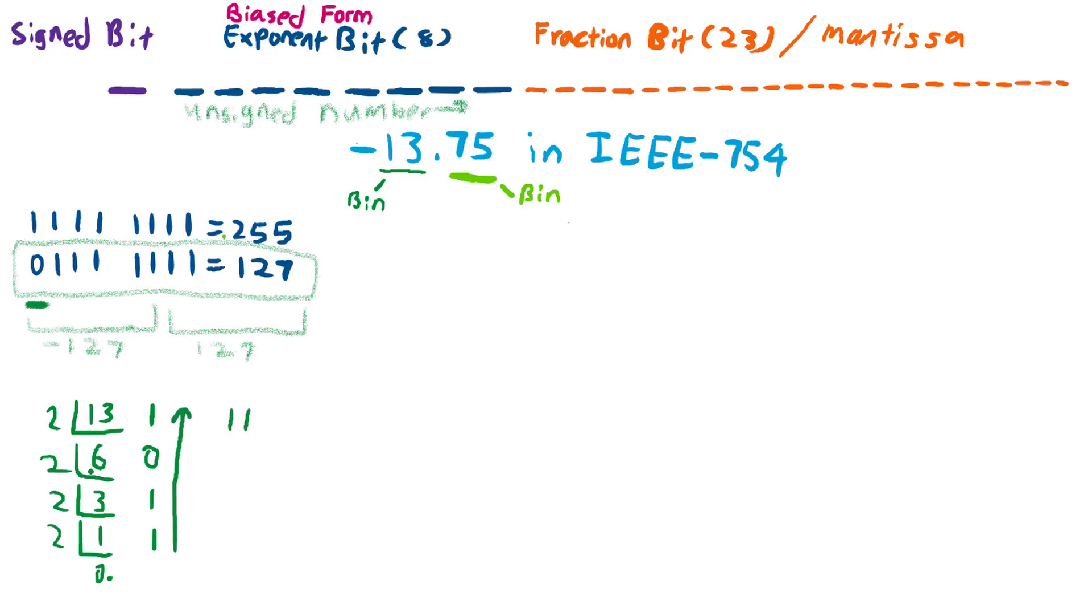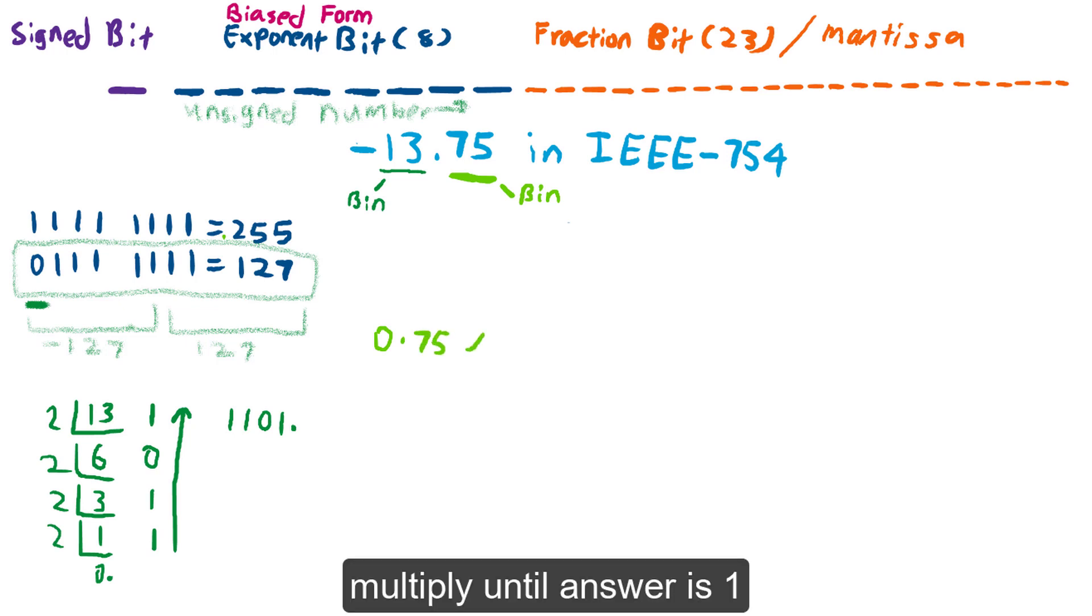So let's write it down first: 1101. Now let's look at how to convert the decimal part into binary. The process is a bit different, so I'm going to show you how.